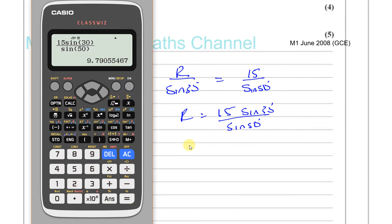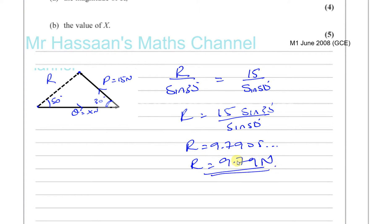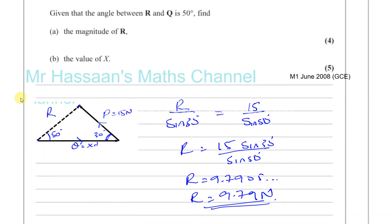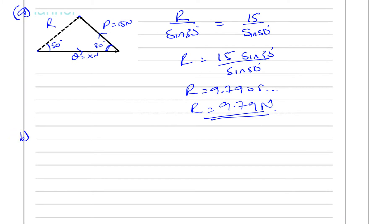So R is 9.7905..., which we round to 9.79 to 3 significant figures. We don't round to 2SF because there's no G involved in this question. And that's part A.